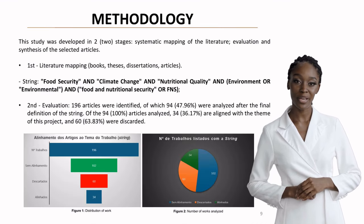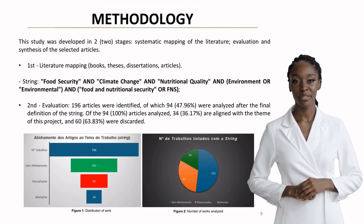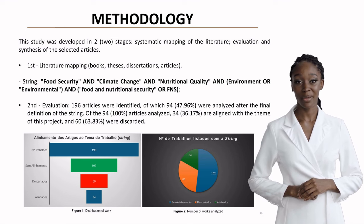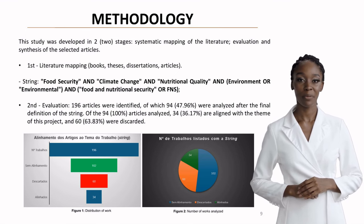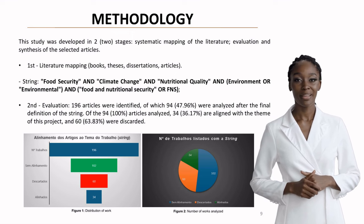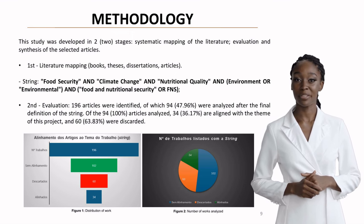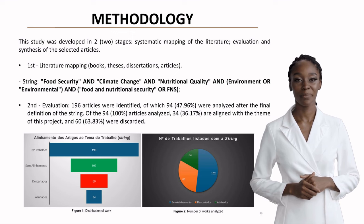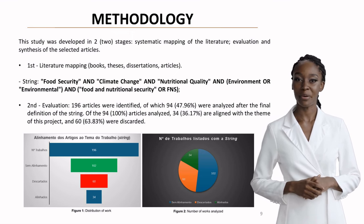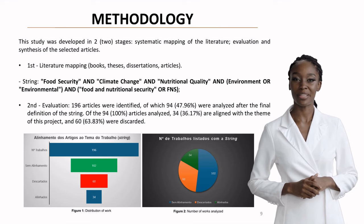Our methodology involved two key stages: systematic literature mapping and evaluation. From 196 identified articles, 94 were analyzed after applying our search criteria. Of these, 34 aligned with our research focus. We supplemented this with additional sources and expert consultations.